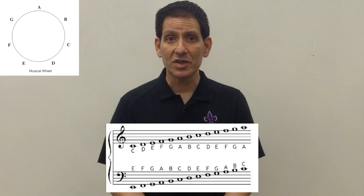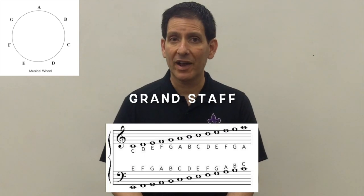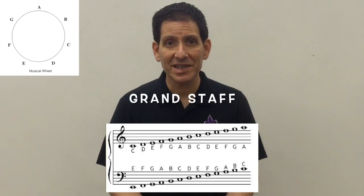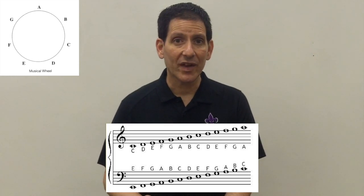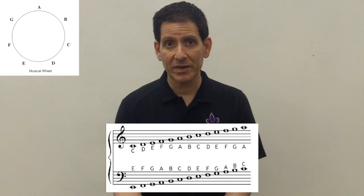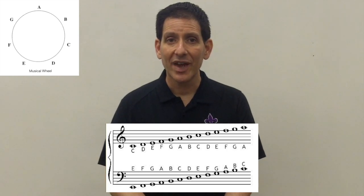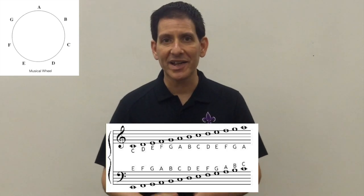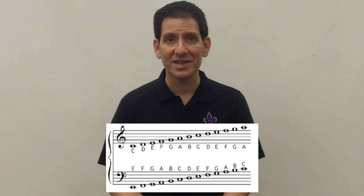The grand staff, which is used by piano, is a combination of the treble clef and the bass clef, so everything we've talked about applies. I would always base everything off of middle C, because you can count down from middle C into the bass clef or up from middle C into the treble clef, until you're comfortable with where all the lines and spaces are and what notes are on them.